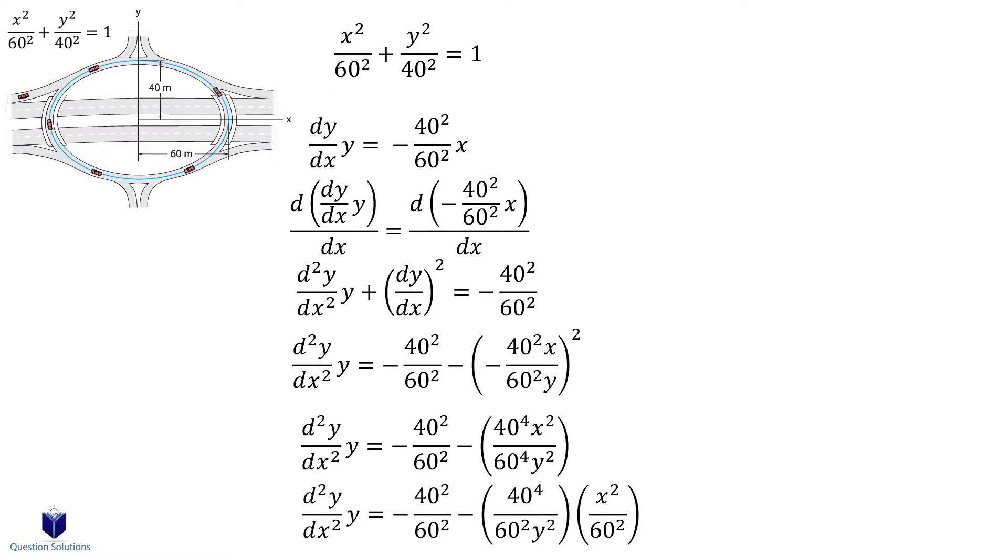So all I did was separate the multiplication terms inside the bracket. Now look at what we have. We have x squared over 60 squared. And look at our original equation. If we isolate for that term in the original equation, we can write it as 1 minus y squared over 40 squared. We can now substitute that in.